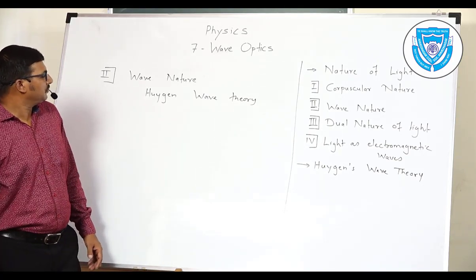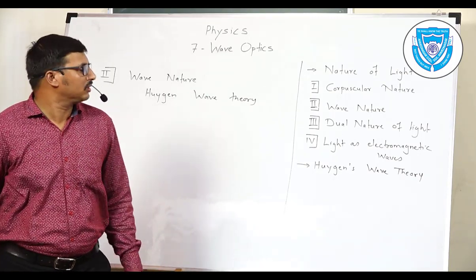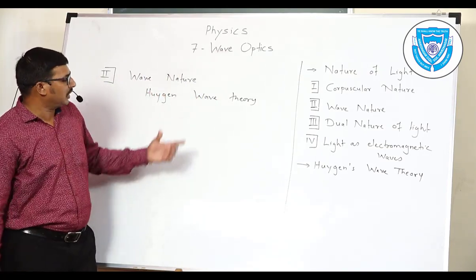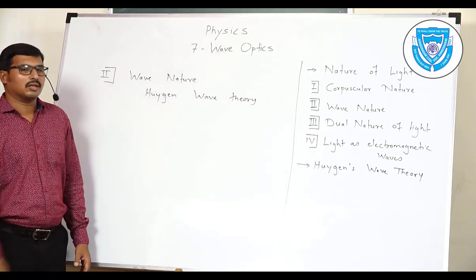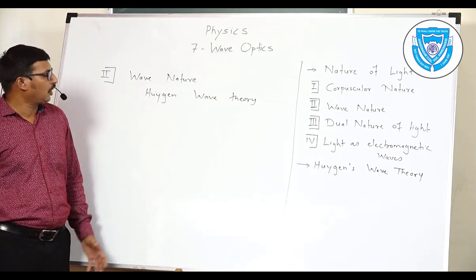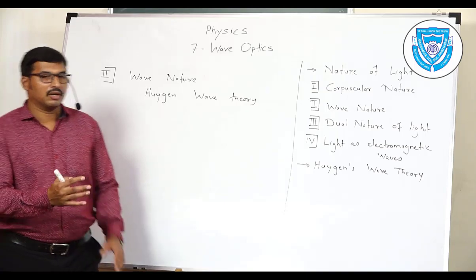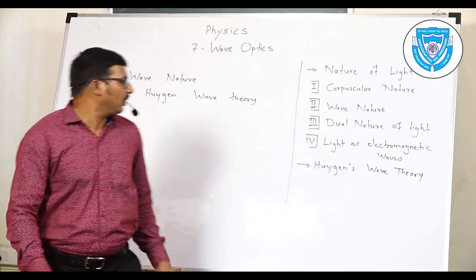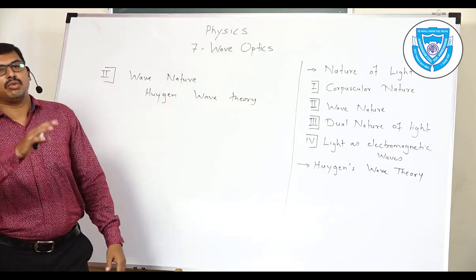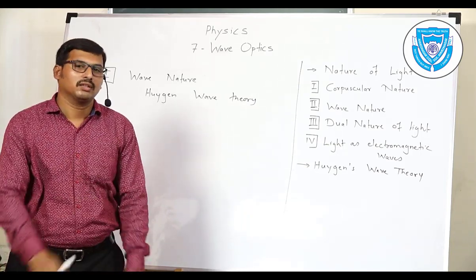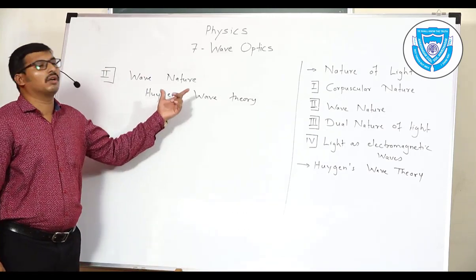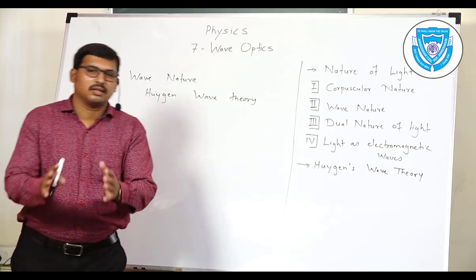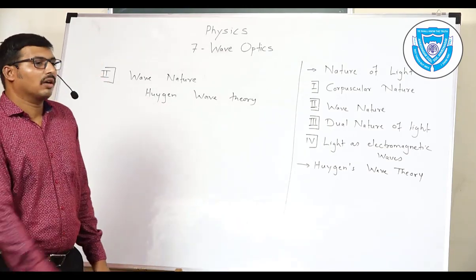The third point: Huygens explains a number of phenomena — reflection and refraction — according to his wave theory concepts, which we will study separately. The phenomena satisfactorily explained by Huygens' wave theory include reflection, refraction, interference, and diffraction. However, certain phenomena cannot be explained by Huygens' wave theory — for example, polarization of light and the photoelectric effect — which were later explained by other scientists and other theories. So there are certain points that are correct and some that are incorrect in Huygens' wave theory of light.